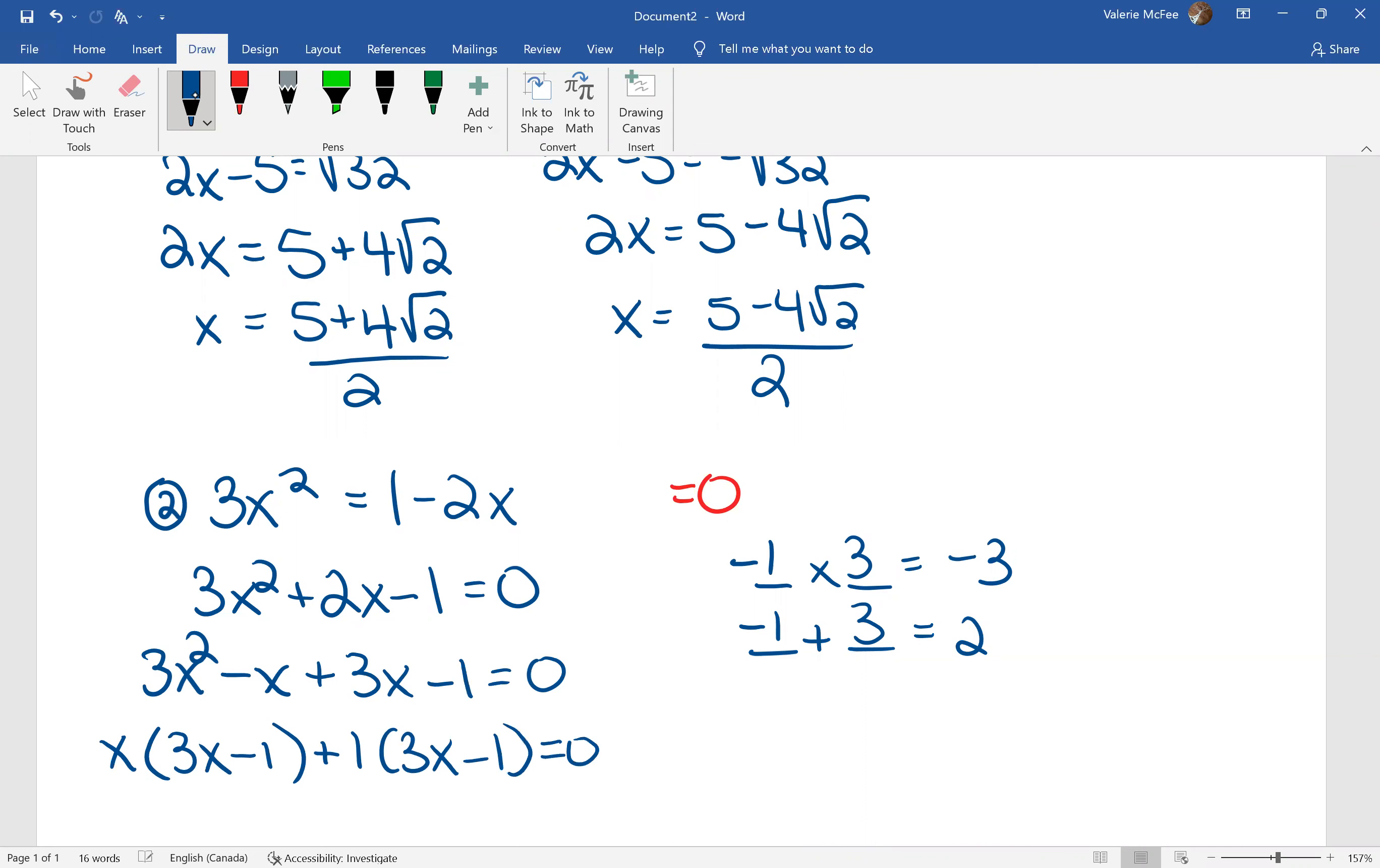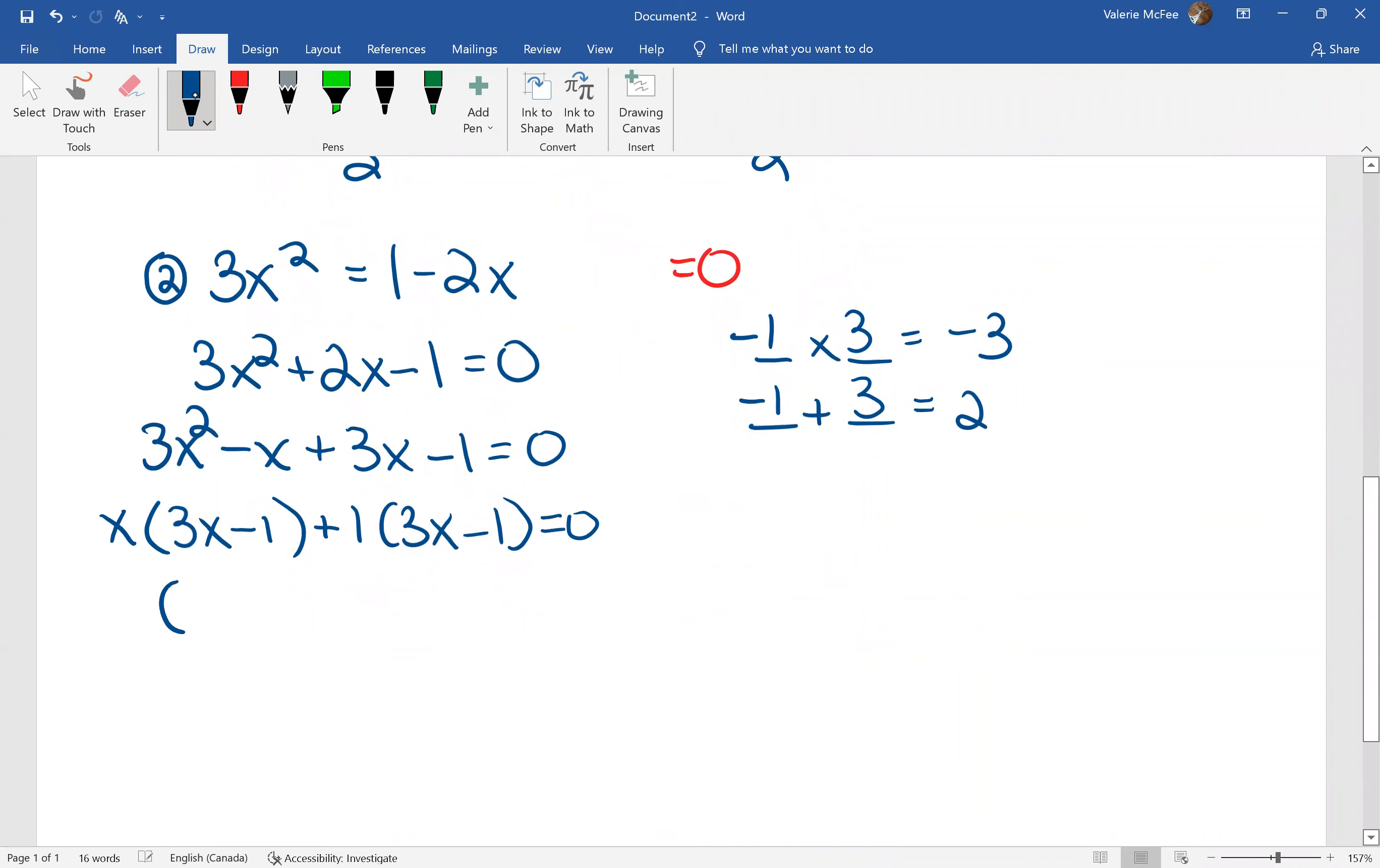We see that three X minus one is common, leaving a factor of X plus one. We use the zero factor theorem. Each factor has to equal zero. And we have two values for X: one over three and negative one.